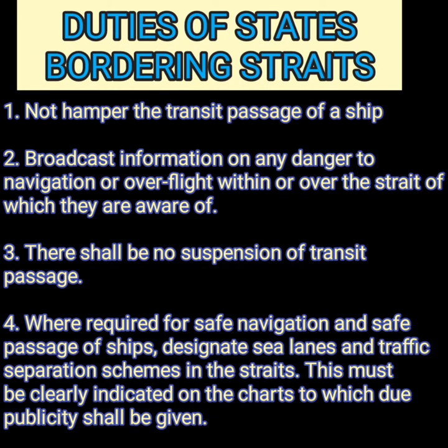Similar to the duties of coastal states, there are certain duties of the bordering states of an international strait. They must not hamper the transit of a ship, and must broadcast information on any danger to navigation or overflight within or over the strait of which they are aware. There shall be no suspension of transit passage, and where required for safe navigation, bordering states must designate sea lanes and traffic separation schemes in the straits. All such schemes must be clearly indicated on charts, to which due publicity shall be given.